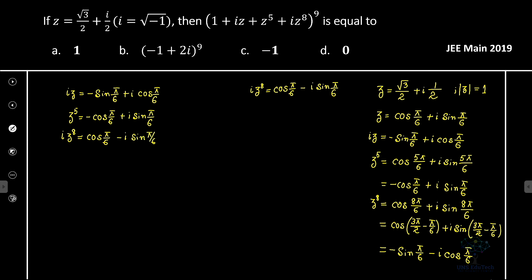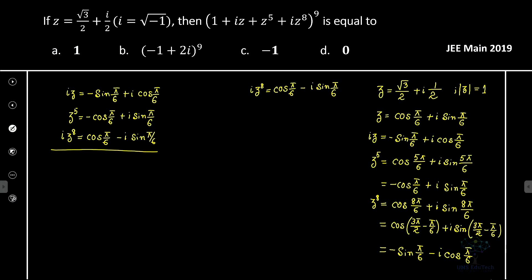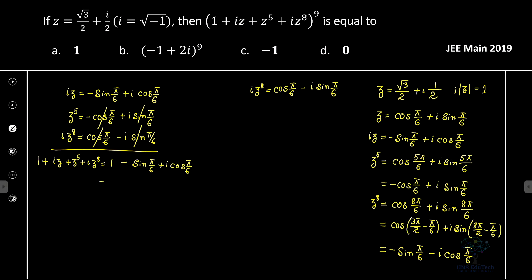Now we add all terms together: iz + z⁵ + iz⁸. The cos(π/6) terms cancel and the i·sin(π/6) terms cancel, leaving −sin(π/6) + i·cos(π/6). Adding 1 to both sides gives 1 − sin(π/6) + i·cos(π/6), which is 1/2 + i·√3/2.